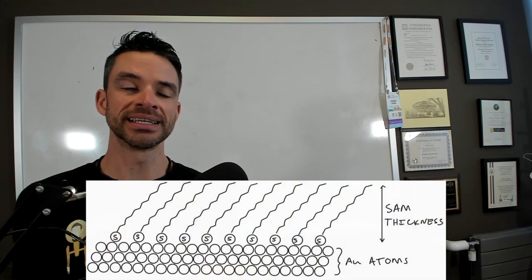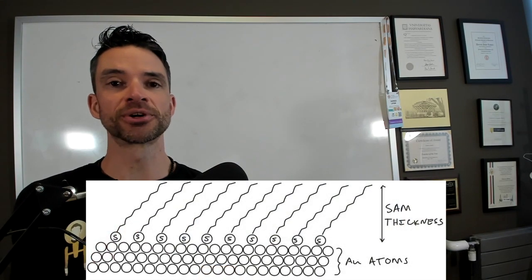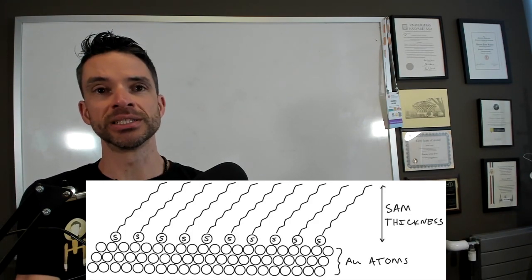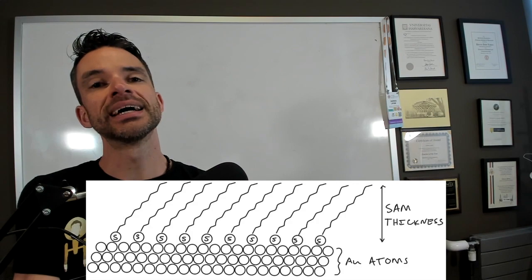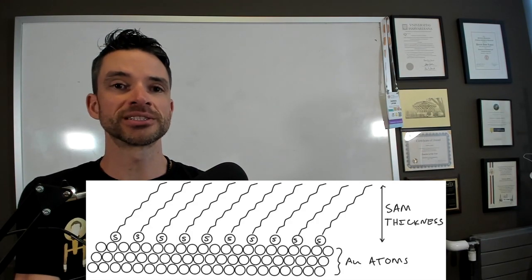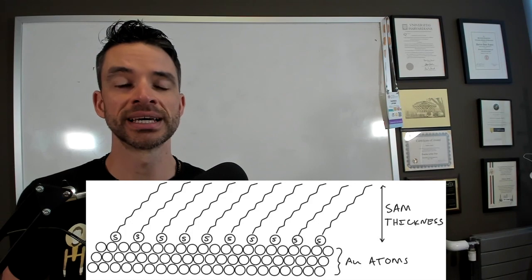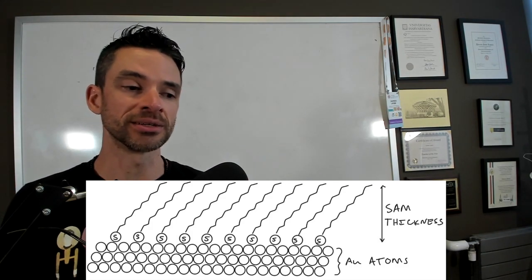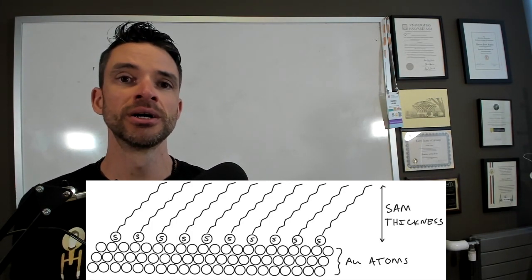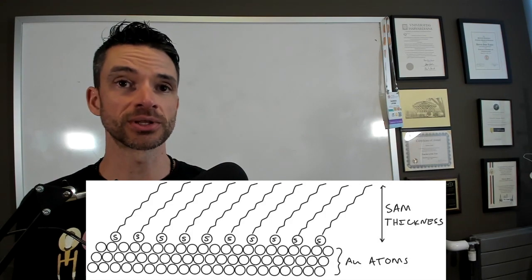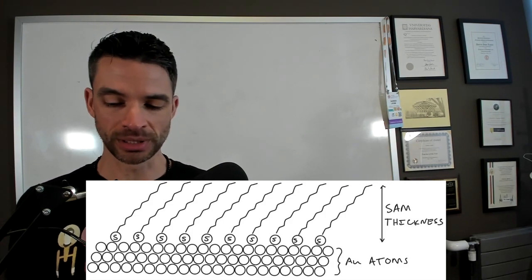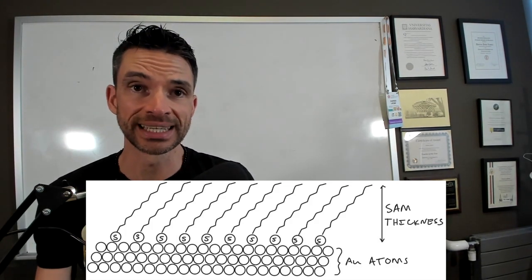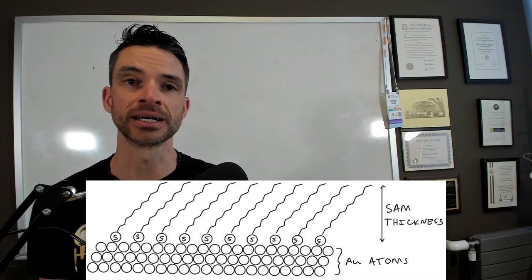There's another type of monolayer called the self-assembled monolayer, which is based on the interaction of sulfur with coinage metals or noble metals like gold, silver, platinum, palladium, and to a lesser extent copper. These sulfur atoms can stick with a bond strength of almost a covalent bond, and you can use those structures as handles to grow polymers off of, or you can bind biomolecules to them, especially if the gold is a nanoparticle. For example, certain types of lateral flow assays, again for COVID-19 rapid tests, are made using this way.